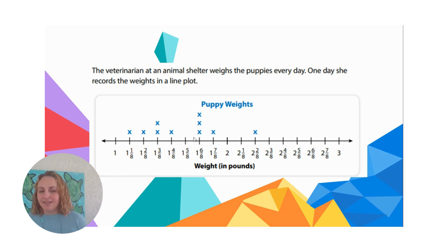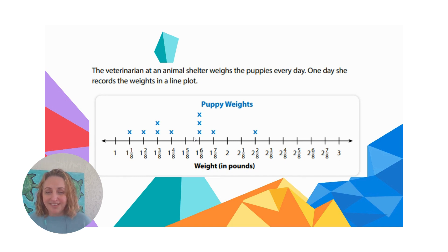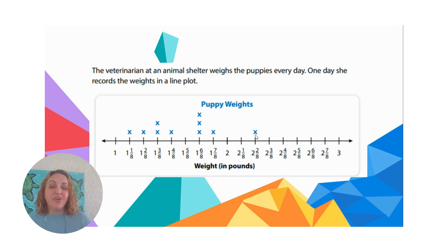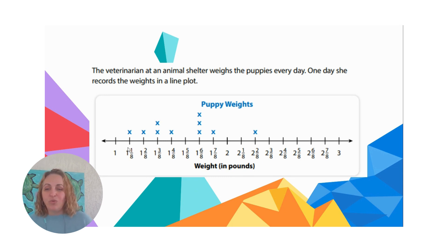What is the heaviest puppy? Go ahead and pause and answer. The heaviest puppy is two and two eighths pounds, because that's the biggest number that has an x on top. And the lightest puppy is one and one eighth pounds.